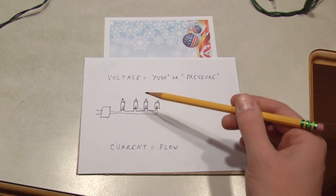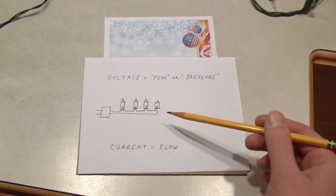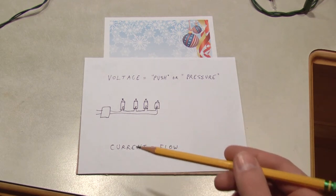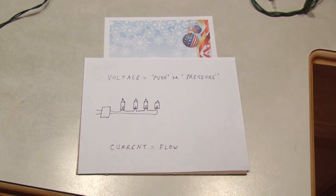Now, the reason that a burned out bulb doesn't make the rest of the lights go out is there's little shunts inside of these bulbs that will complete the circuit even if the filament burns out, or at least they're supposed to. It doesn't always work, but that's a subject for a different video.